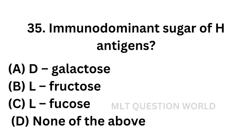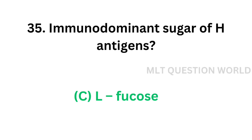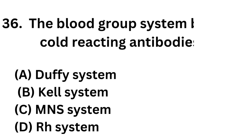Question No. 35. Immunodominant sugar of H-antigen. Option A: D-galactose. Option B: L-fructose. Option C: L-fucose. Option D: None of the above. The correct answer is Option C — L-fucose. L-fucose is the immunodominant sugar of H-antigen. This is an important question which is asked in many question papers.